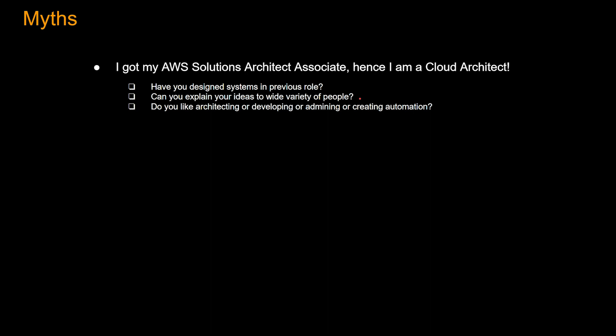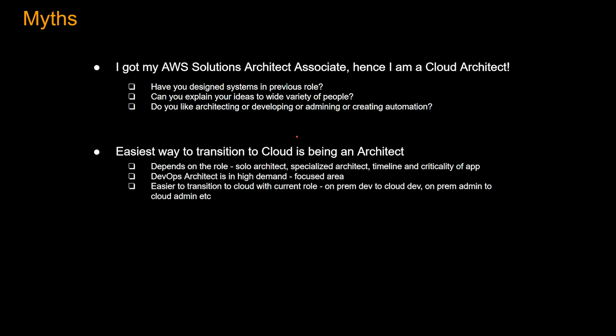Another question to ask yourself is: what do you like to do more — architecting, developing, system admin, or creating automation? Myth number two: the easiest way to transition to cloud is by being an architect. Well, it depends. Let's say you are a solo architect with no other architect help and you have never architected a project in cloud before — that's a lot of stress on you.